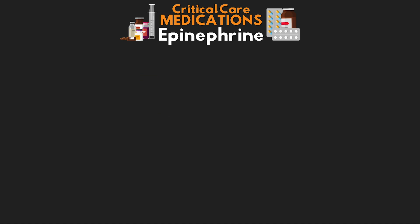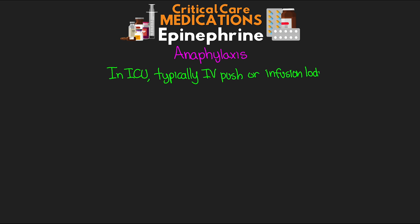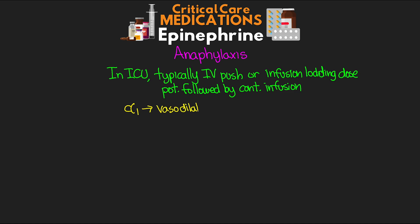Let's talk about epi's use with anaphylaxis. The EpiPen is commonly known throughout our society, and while we can give epi either intramuscular or subcutaneous for this treatment, in the ICU we're often going to be giving an IV push dose or an infusion loading dose, and then potentially following that with a continuous infusion. Even giving this medication intramuscularly can take some time for onset, and the pharmacokinetics can be quite erratic, so we have more control by giving the IV dose. Here we benefit from the alpha-1 effects supporting blood pressure during the massive vasodilation and shock associated with anaphylaxis, as well as vasoconstriction helping to reduce laryngeal edema.